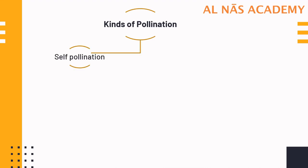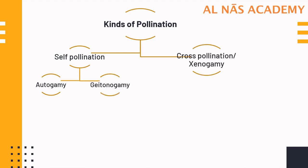Pollination is broadly classified into self-pollination and cross-pollination. Self-pollination is further divided into autogamy and geitonogamy. Cross-pollination, which is also known as xenogamy, is divided based upon the agencies which help in the transfer of pollen.